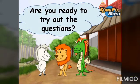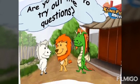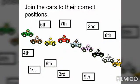Are you ready to try out the questions? Here is the test — you can write your answer on paper. The instruction is: join the cars to their correct positions. Look carefully at the position of the cars and connect each ordinal number to the right car, or connect the car to its correct ordinal number position.